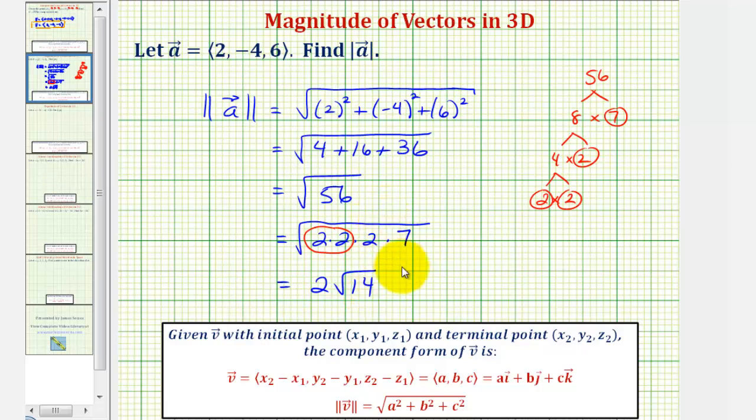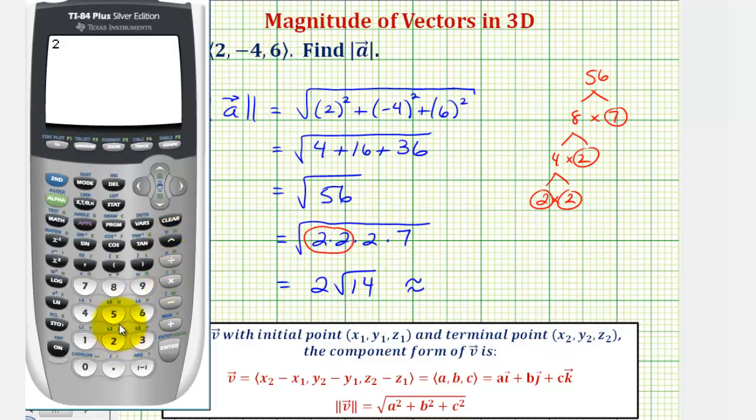Let's also look at a decimal approximation for this value. So 2√14 is approximately 7.4833.